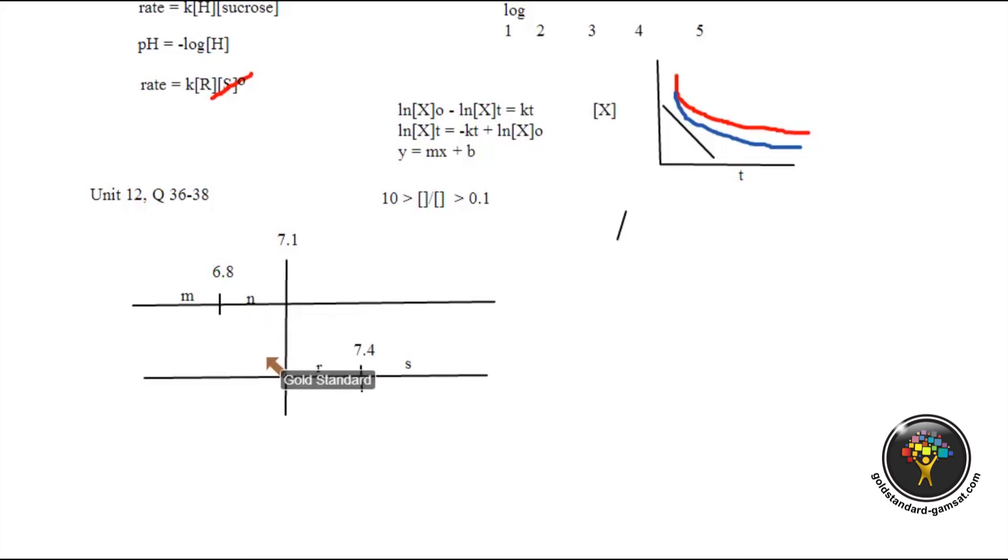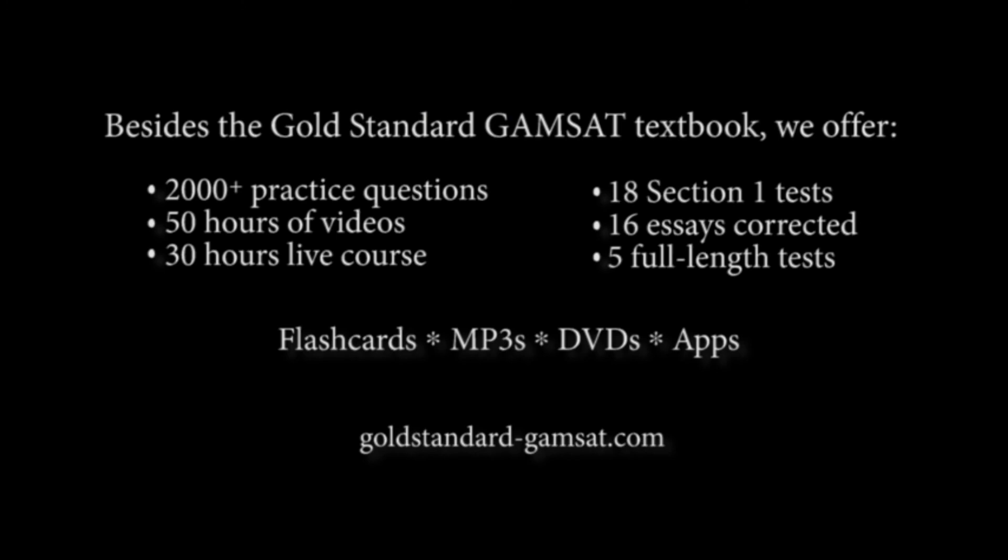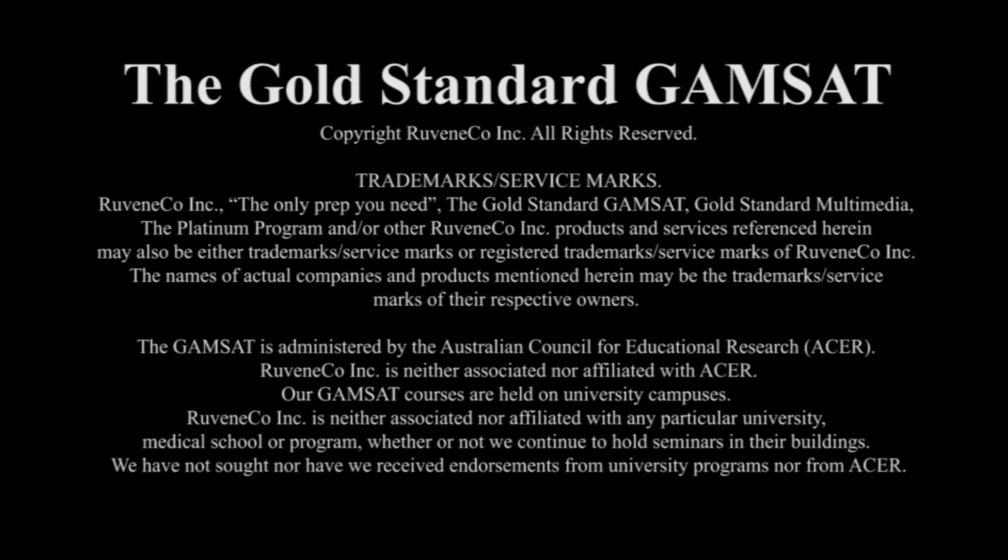And because the distances, the numbers are equal, therefore those components are equivalent to each other. So r is below the pKa, 7.1 is below the pKa of 7.4.